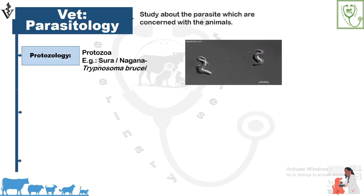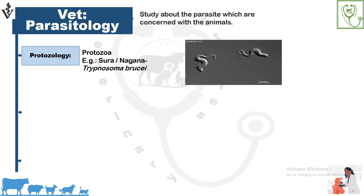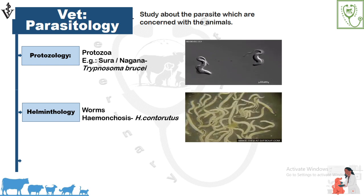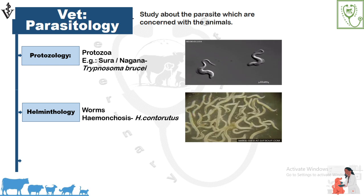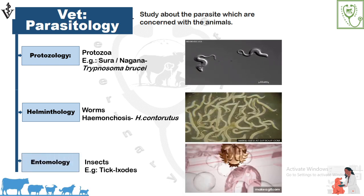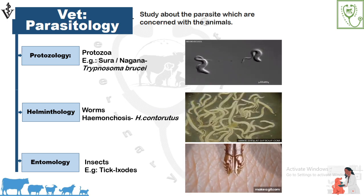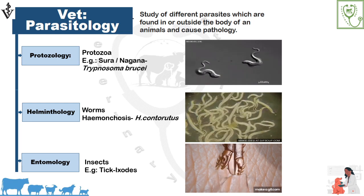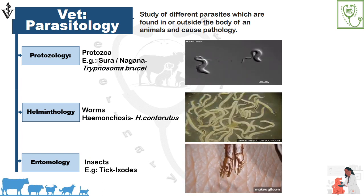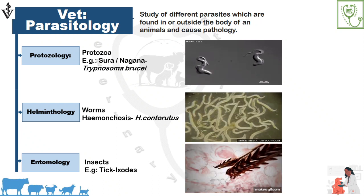Veterinary parasitology is the study of parasites which are concerned with animals. It includes protozoology — the study of protozoa which cause diseases in animals, such as Theileria and Trypanosoma. For example, surra and nagana are protozoal diseases caused by Trypanosoma brucei. Helminthology is the study of helminths or worms found in animals — for example, haemonchosis caused by Haemonchus contortus in small ruminants. Entomology is the study of insects such as flies and ticks. The classification of protozoa, helminths, and insects will be discussed in their respective lectures.